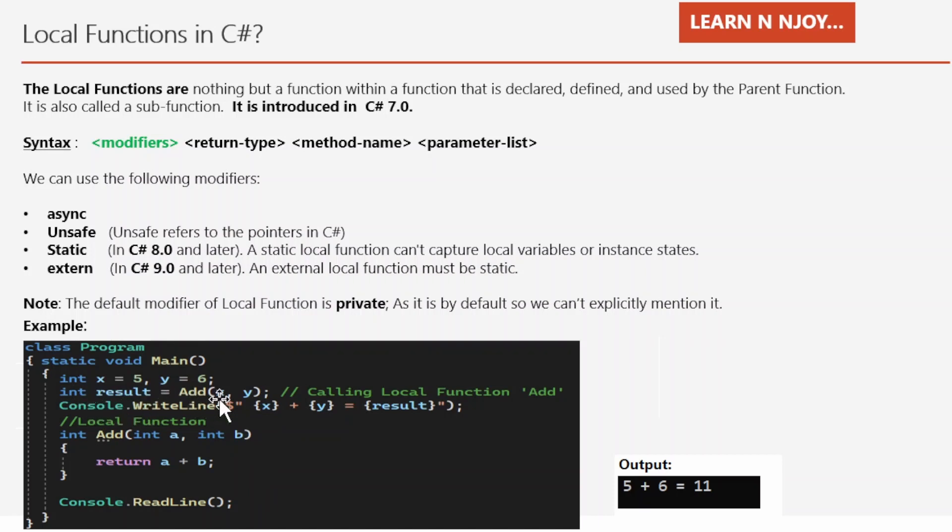Now this is the local function I have defined. In the second line statement, I'm calling this local function Add, passing x equals 5 and y equals 6. The result after performing this addition operation is stored in the result variable, and finally we're writing 'x plus y equals result' into the console.WriteLine statement. If you see the output, it's coming as 5 plus 6 equals 11, which is the expected output.